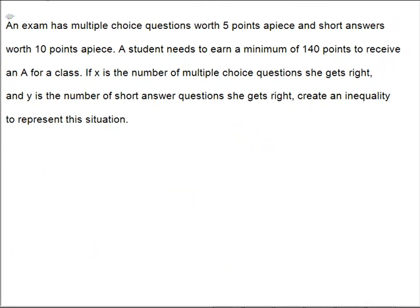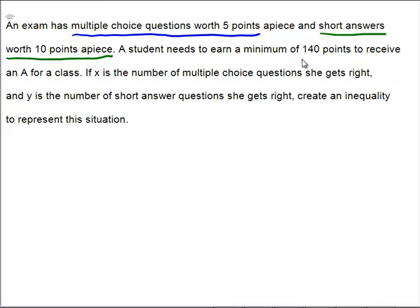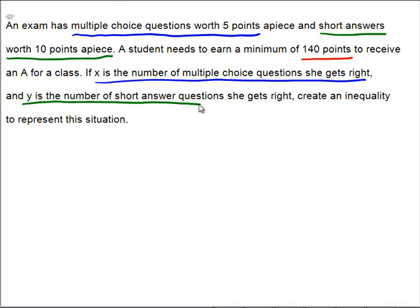Let's take some word problems and figure out some inequalities from the words in the problem. An exam has multiple choice questions worth five points apiece and short answers worth ten points apiece. A student needs to earn 140 points to receive an A for the course. Let X be the number of multiple choice questions she gets right and Y be the number of short answer questions she gets right. Let's put this together and make an inequality.